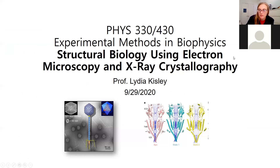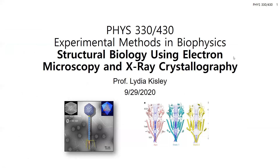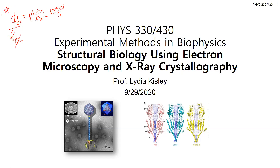A couple people have asked about problem one on the problem set. In the supplemental document, this variable Φ_5x is actually the photon flux — these are photons per second. Some people are getting confused that this is not the quantum yield of the dye. Just clarifying that from office hours today. Since this is the first class, you guys are the guinea pigs, so there may be typos — hopefully this helps clarify problem one.